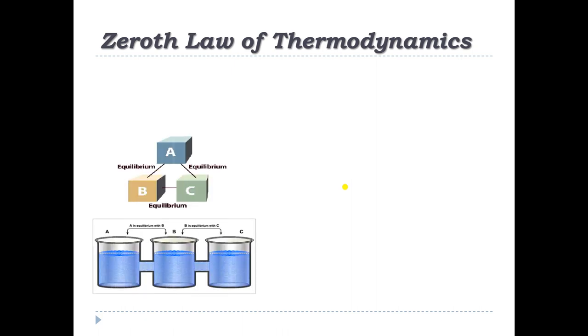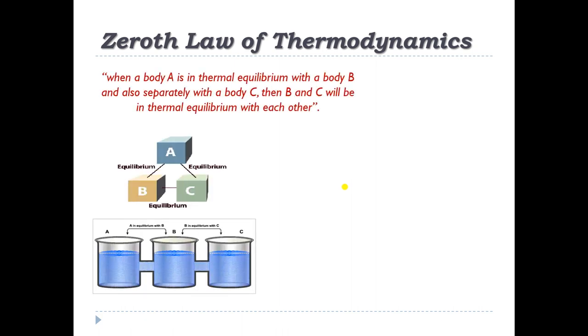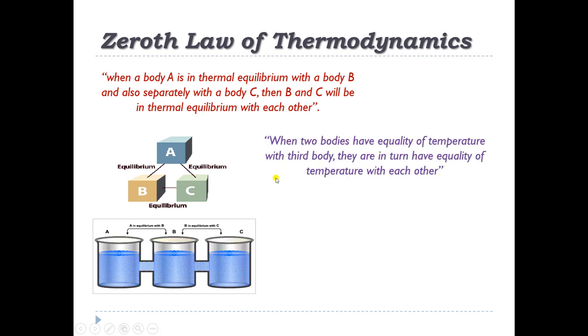The zeroth law of thermodynamics is the basis of temperature measurement. The statement given for the zeroth law is: when a body A is in thermal equilibrium with body B and also separately with body C, then bodies B and C will be in thermal equilibrium with each other. It can also be stated as: when two bodies have equality of temperature with a third body, then they in turn have equality of temperature with each other.